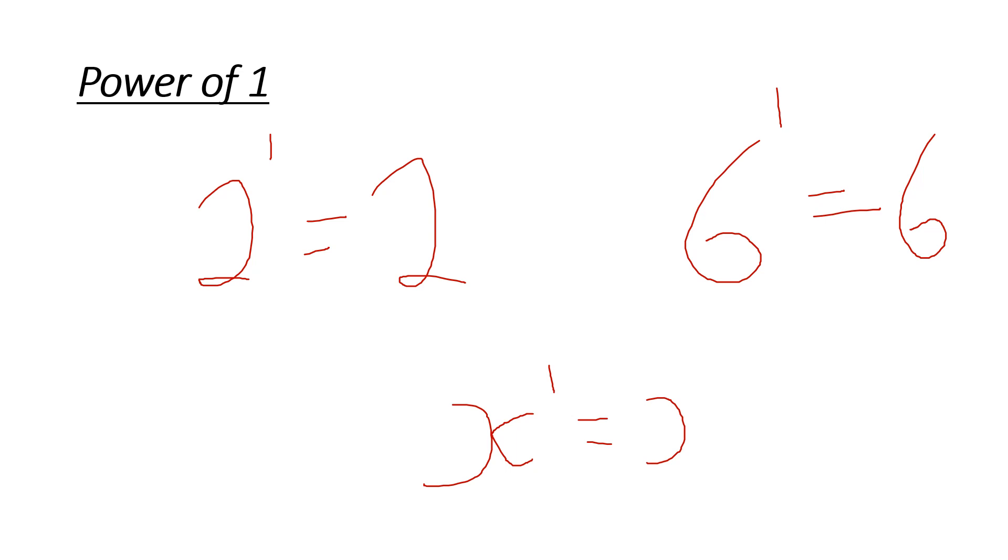So two rules today, guys. Anything to the power of 0 is equal to 1 apart from 0 to the power of 0. And any number to the power of 1 is just itself. This is very important for GCSE 5 to 1. Must keep watching.